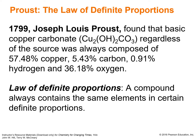In 1799, Joseph Proust found that basic copper carbonate — here's the formula — regardless of how it was made, was always composed of the same percentage of copper, carbon, hydrogen, and oxygen. The percentages are listed here, and from this he formulated the law of definite proportions.